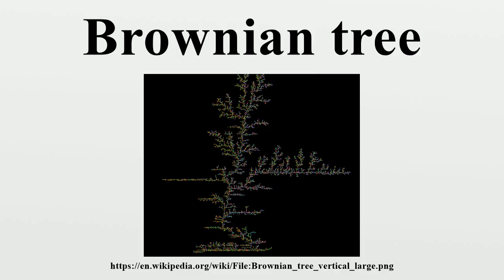A Brownian tree is built with these steps. First, a seed is placed somewhere on the screen. Then, a particle is placed in a random position on the screen and moved randomly until it bumps against the seed. The particle is left there, and another particle is placed in a random position and moved until it bumps against the seed or any previous particle, and so on. The resulting tree can have many different shapes,